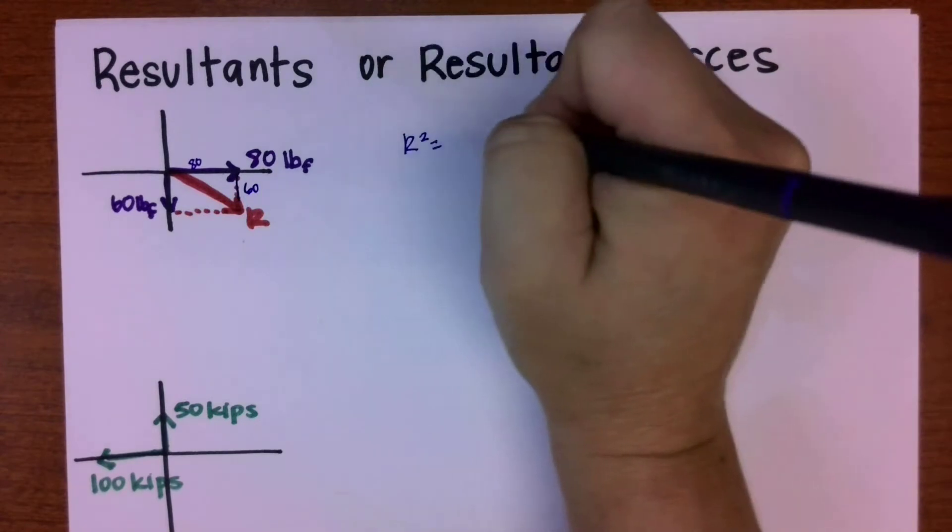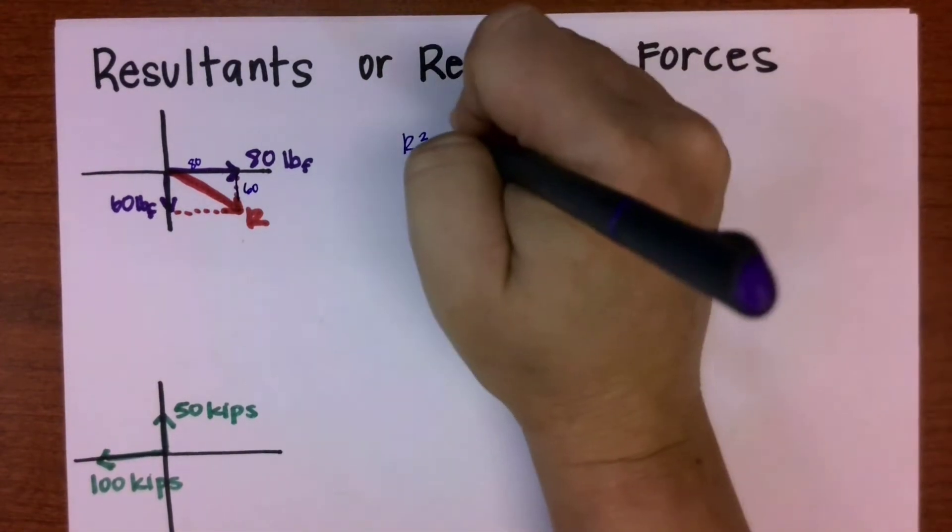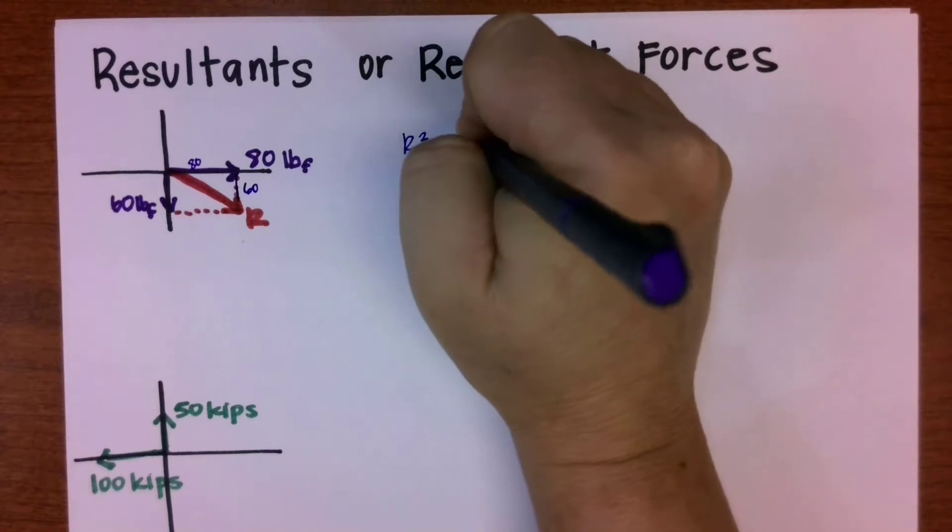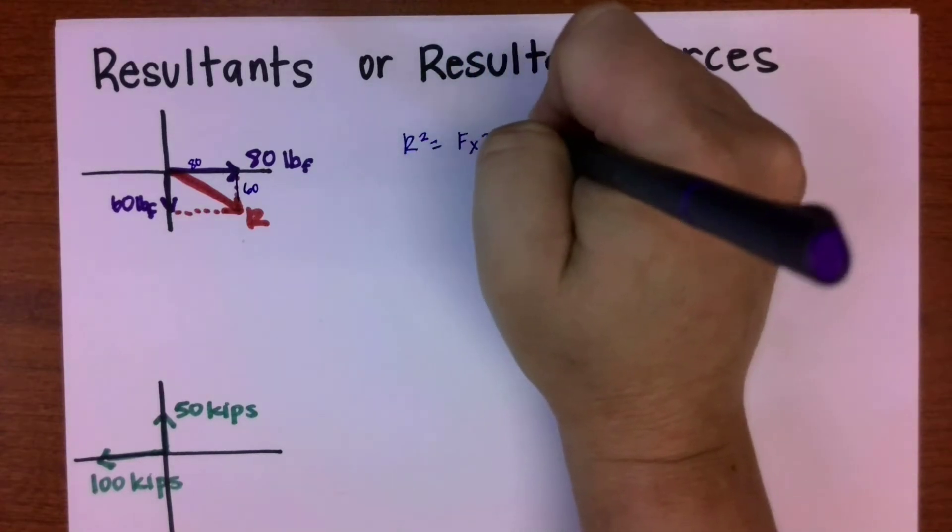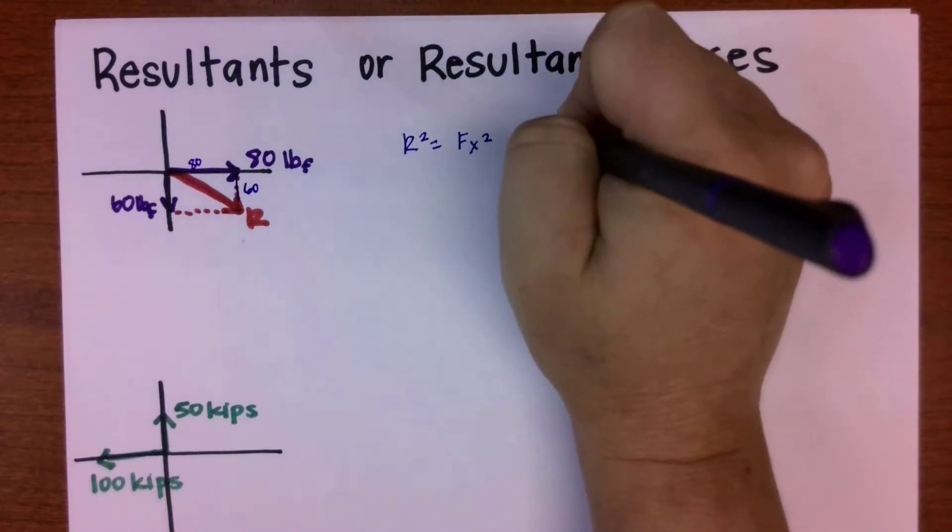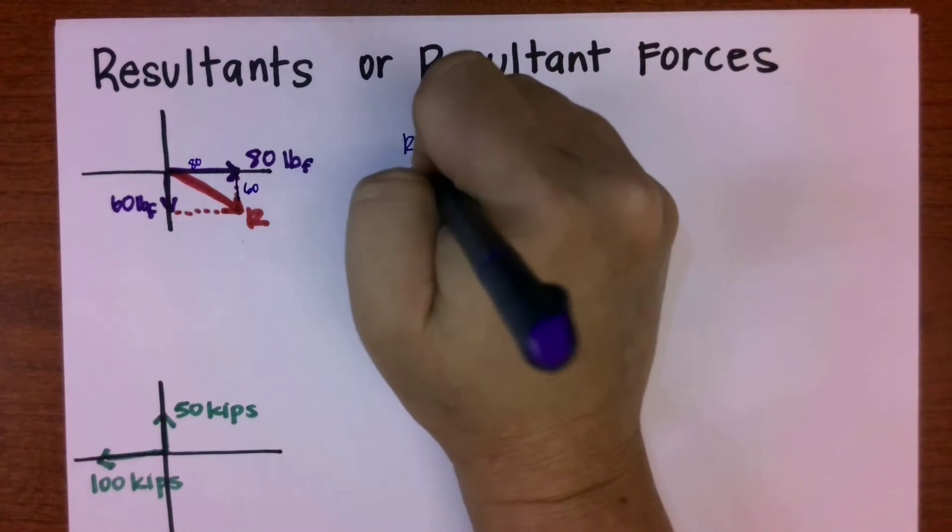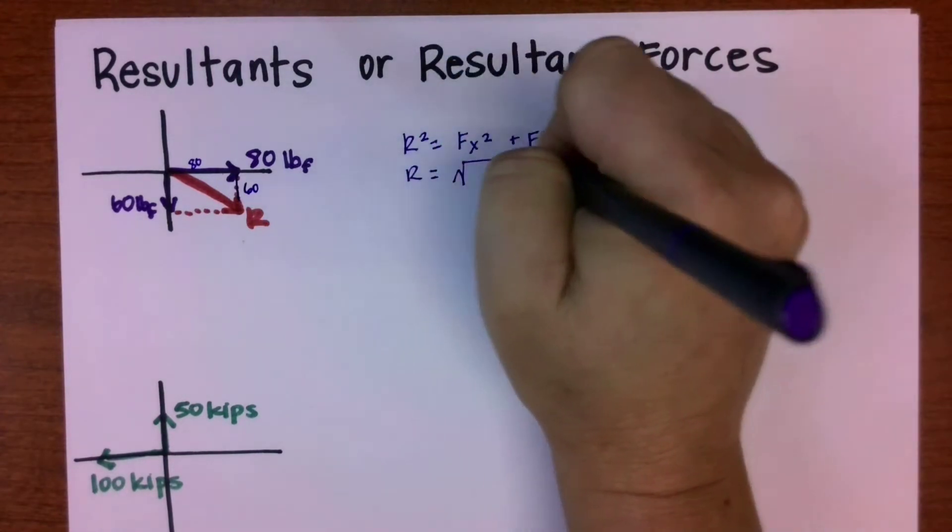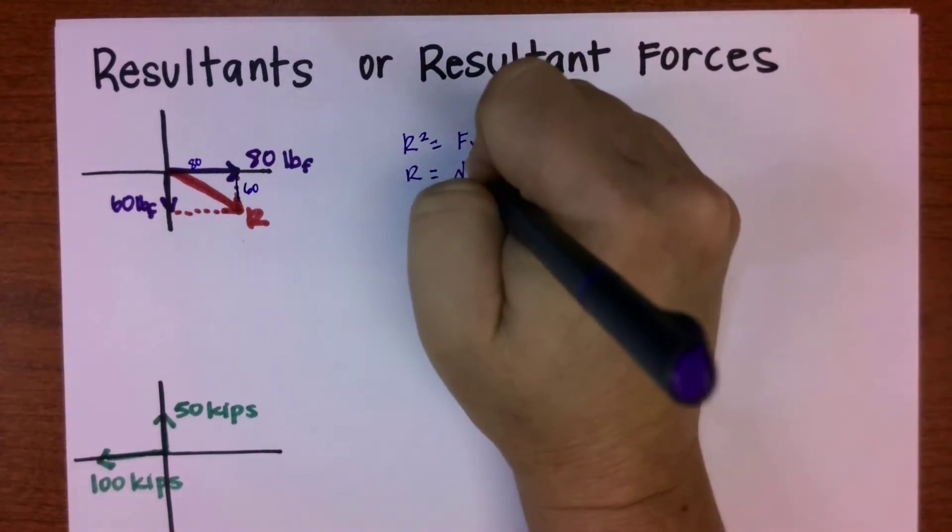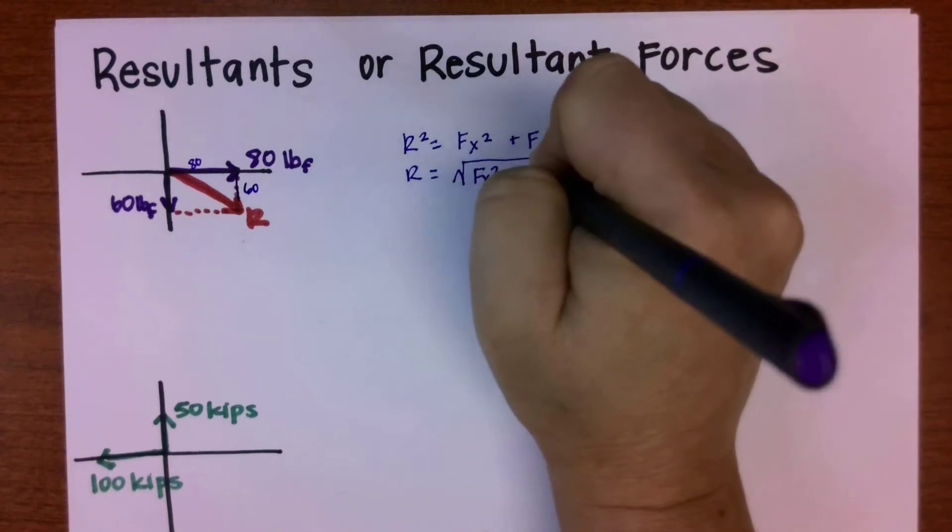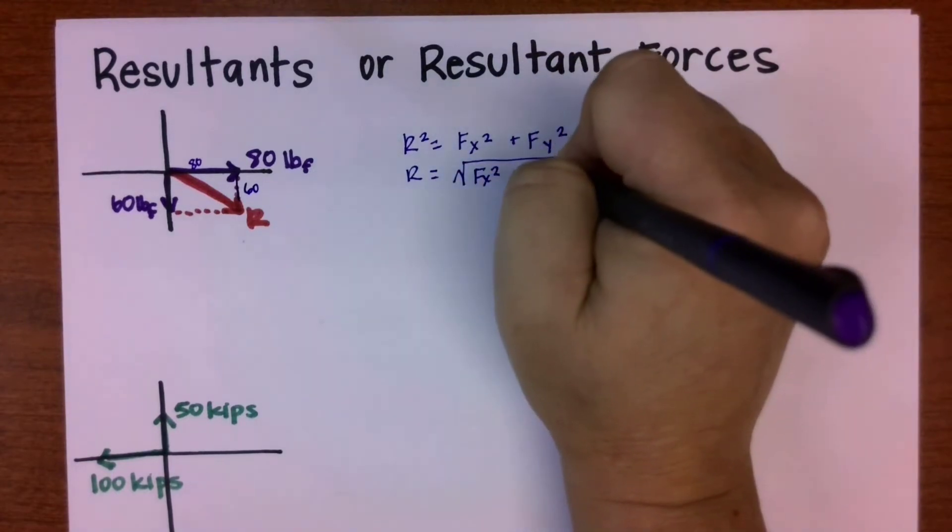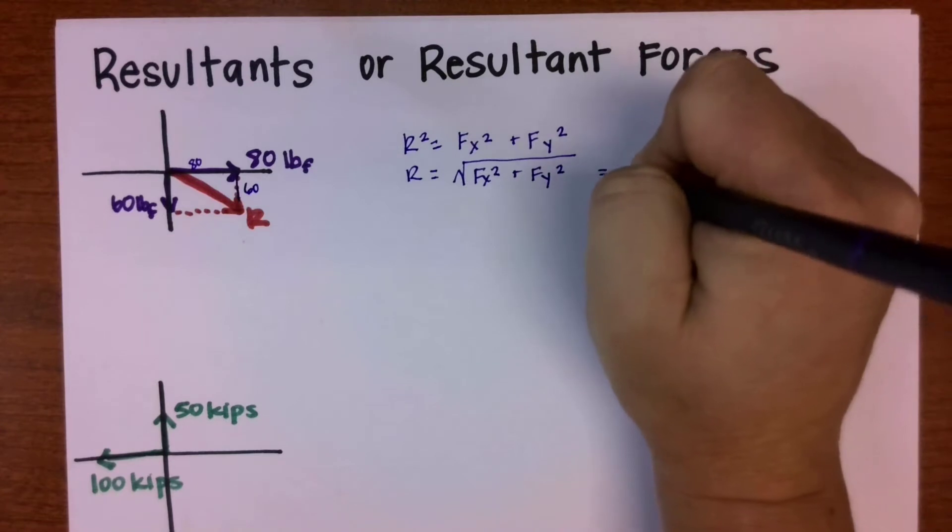If we start with the Pythagorean theorem on that triangle, the resultant squared is the hypotenuse. We can say fx squared plus fy squared is equal to r squared, so the square root of that whole thing is the resultant. That's the square root of 60 squared and 80 squared.